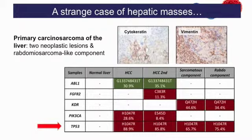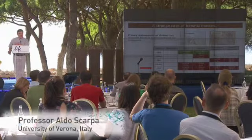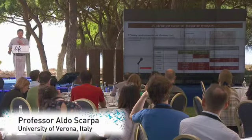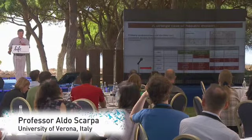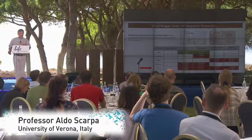This is a particular case of a carcinosarcoma — carcinoma and sarcoma together. The p53 mutation is telling us that the same cell gave origin to two different forms of the tumor, but there are different mutations in the subclones that also look different morphologically. This is a way to describe heterogeneity using molecules.